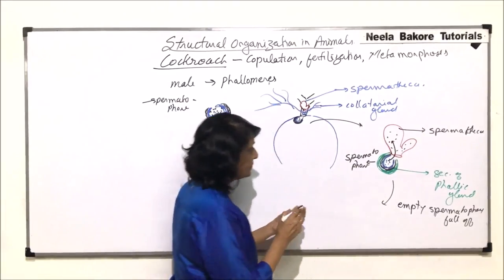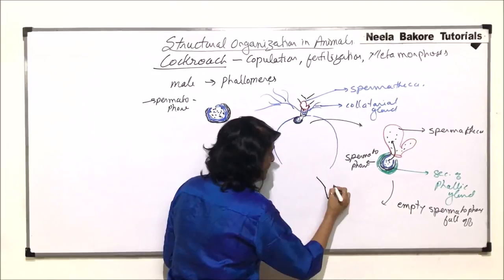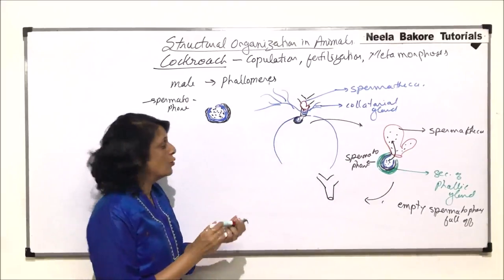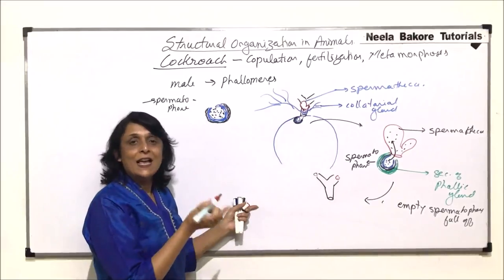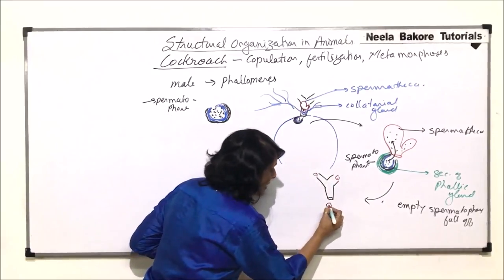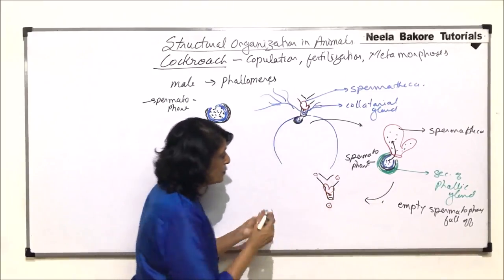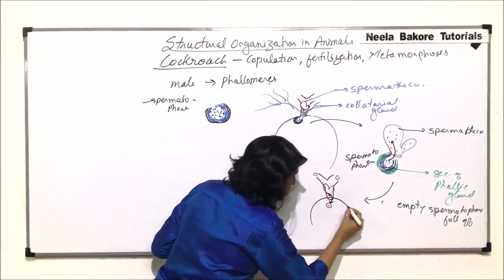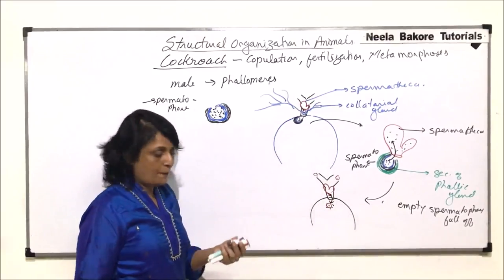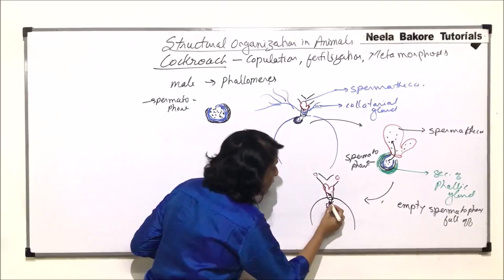In the next stage, the female gonopore releases the eggs. The eggs come from the ovaries alternately — one ovary releases an egg, then the next one. As soon as the egg is released, the sperms are released from the spermatheca into the genital sac, and fertilization takes place. At the same time, there is secretion from the collateral gland.